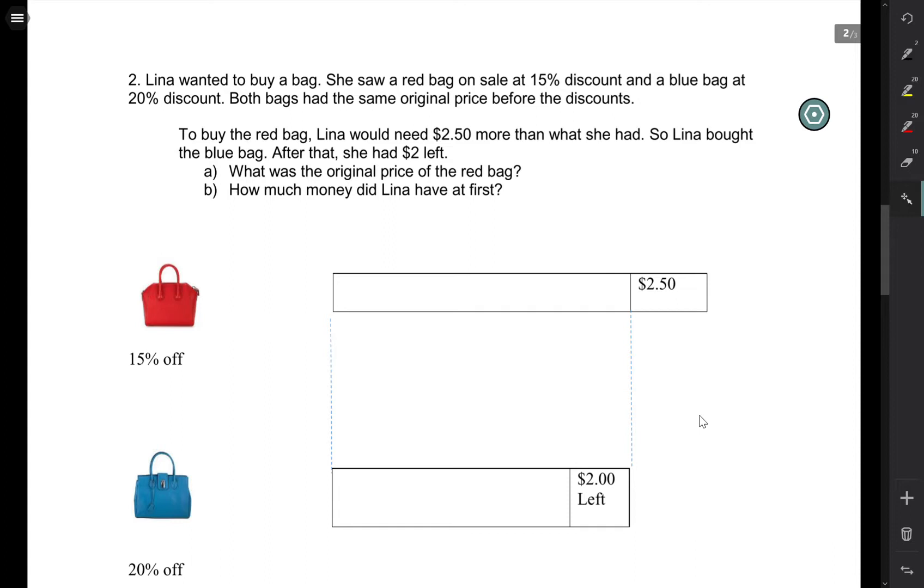Now, to buy the red bag, she will need an additional $2.50. This is actually the price of the red bag. And the yellow one shows how much she has at first. So she needs an additional $2.50. Once again, this is the yellow color, shows how much money she has at first.